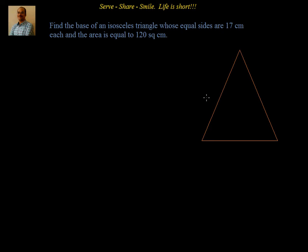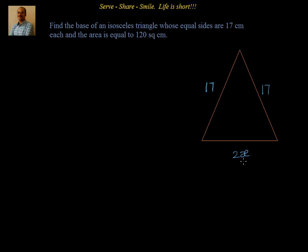We have been given that the equal sides are 17 — so I have two 17's here. I don't know the third side, that is what I have to find out. We will take this value as 2x, because when I calculate the area using the formula half base into height, I will need to use the Pythagoras theorem. To avoid fractions, I will take it as 2x. So my final answer will be twice the value of x that I find by solving the quadratic equation.